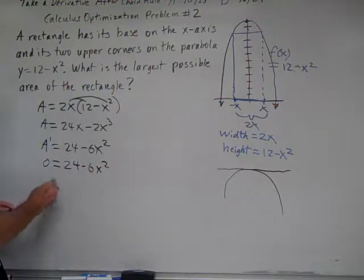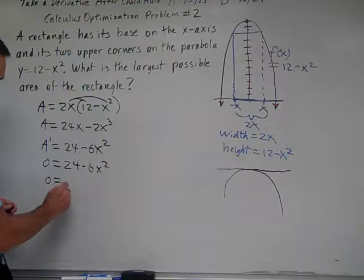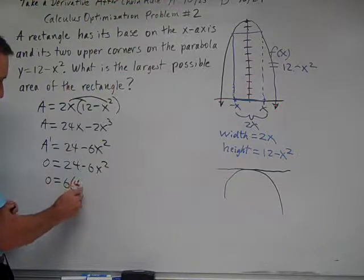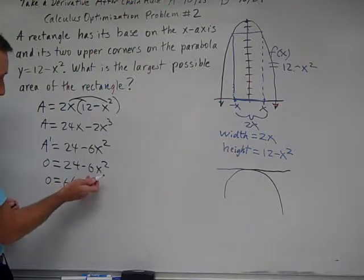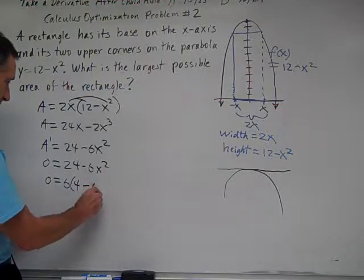And so now we'll solve this equation by factoring. And so 0 equals, we have a common factor, it looks like, of 6 between these two. So 6 times what equals 24? Well, that'd be 4. And 6 times what equals negative 6x squared? Well, that's going to be just negative x squared.